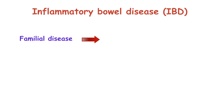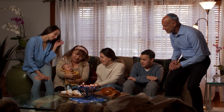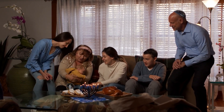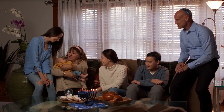IBD is a familial disease in 5-10% of patients, and the strongest risk factor for the development of IBD is a first-degree relative with the disease. The greatest incidence of IBD is among white and Jewish people, but the incidence in Latinx and Asian people is increasing.